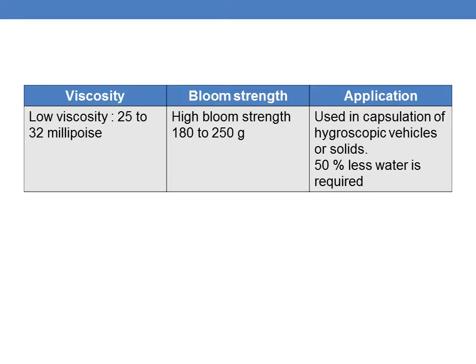Gelatins which have low viscosity — that is, 25 to 32 millipoise — and which have high bloom strength — ranging from 180 to 250 grams — are usually used in the capsulation of hygroscopic vehicles or solids because they require 50% less water.